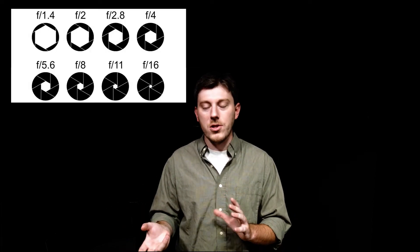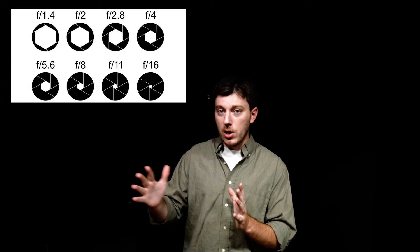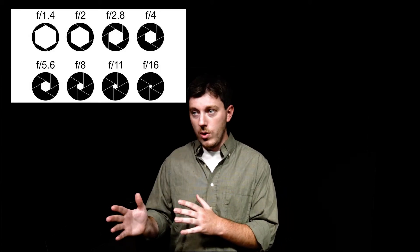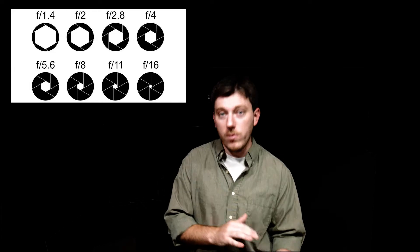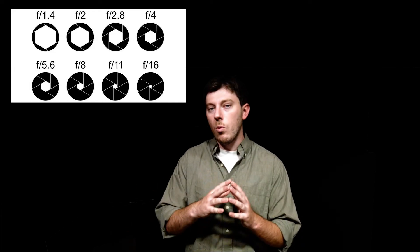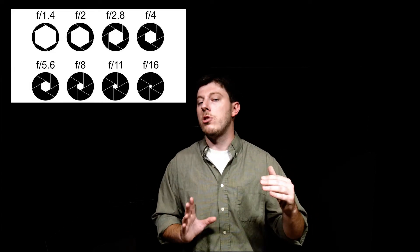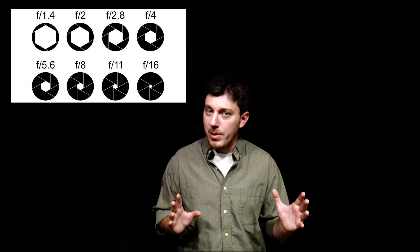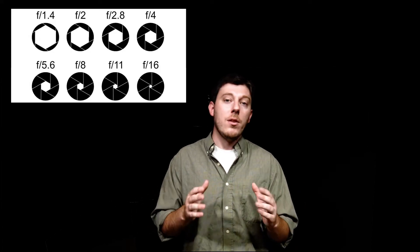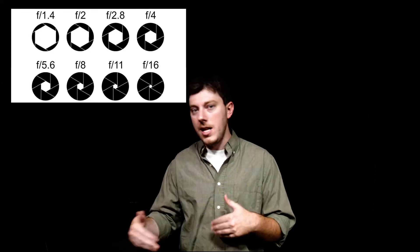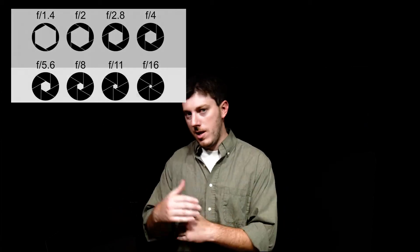So if you've heard F2.0, F5.6 — it's usually denoted like F and then a slash and then the number. It's a little bit counterintuitive at first, but the lower the number gets — so F2, F1.8, F1.4 — the lower it gets, the wider open the aperture is, so the brighter your image will be. And the higher the number is, F18, F20, the darker your image is going to be.